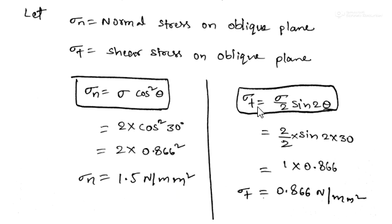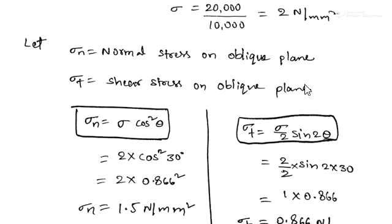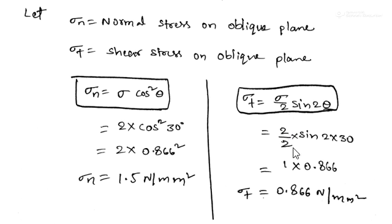For the shear stress, the formula is sigma t equals sigma by 2 sin 2 theta. Sigma, the direct stress, is 2, so 2 by 2 and sin 2 theta where theta is 30. If you simplify that, we are getting the shear stress or tangential stress as 0.866 Newton per mm square.